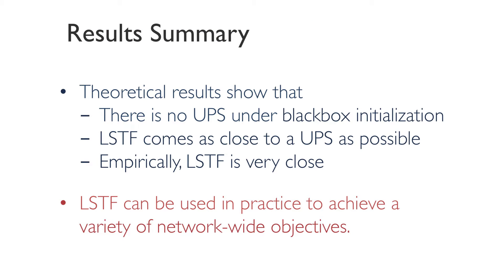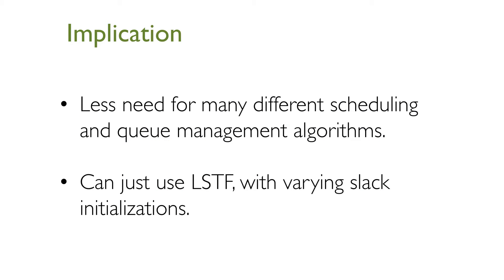To summarize: in this work we discuss universality of packet scheduling using two viewpoints — theoretical and practical. Our theoretical results show that while there is no UPS under the pragmatic black box initialization model, the classical Least Slack Time First algorithm comes as close to being universal as any algorithm can get. Empirically, LSTF is very close to universality under realistic conditions. We then show how LSTF can be used in practice to achieve a variety of network-wide objectives. Our work therefore implies that we might not need many different scheduling and queue management algorithms — we can instead just use LSTF with varying slack initializations.